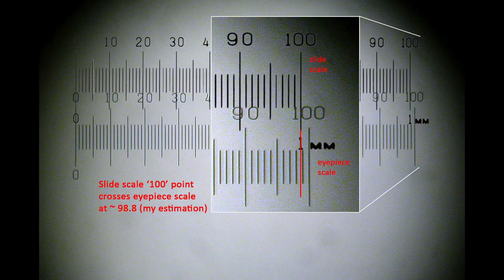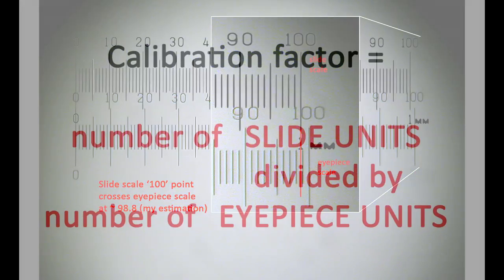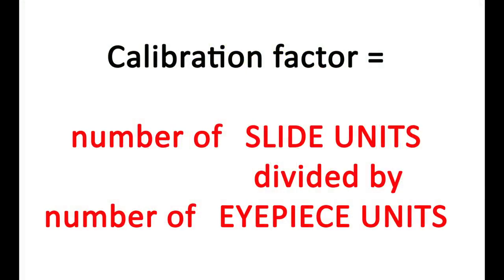Therefore a correction factor must be applied to any subsequent calculation involving the number of eyepiece units you've estimated a subject is represented by, if you want an accurate measurement of your subject, and this has to be done for each objective. The formula is simple. It's the number of slide units divided by the number of eyepiece units. So in this case that's 98.9 divided by 100, which is 0.989.